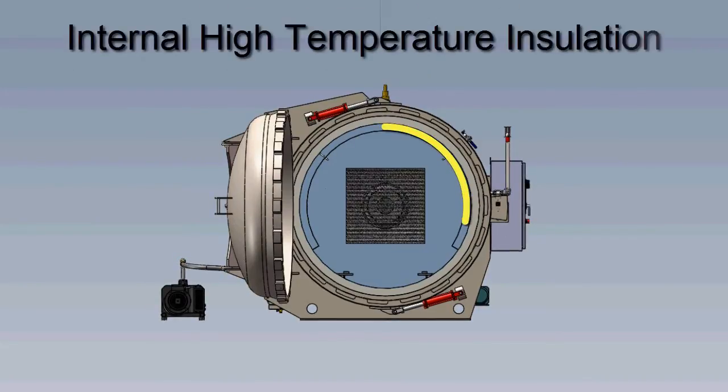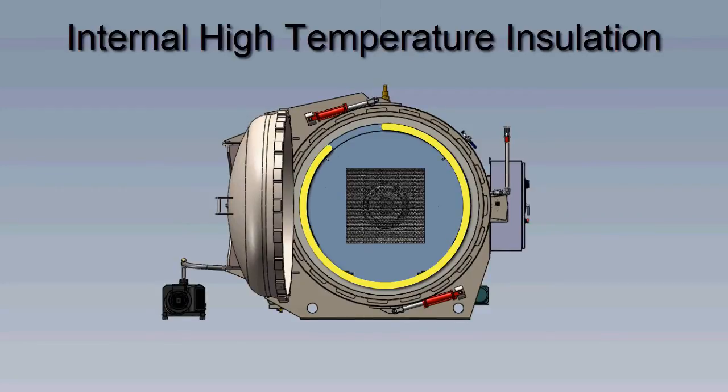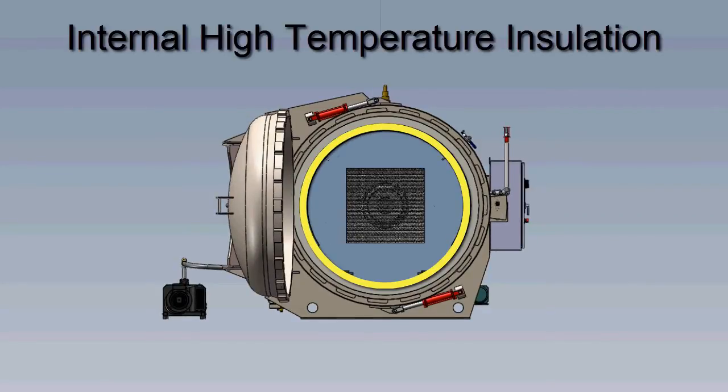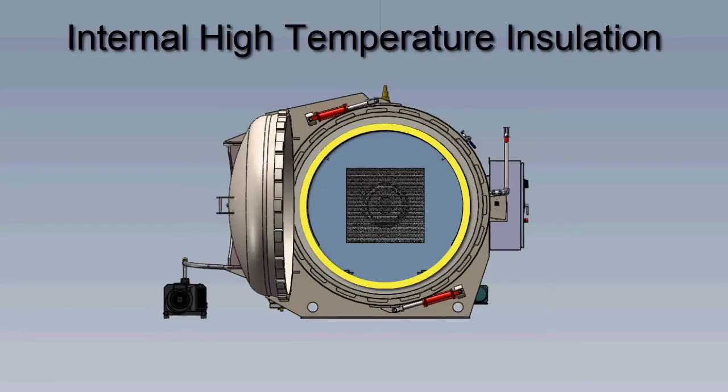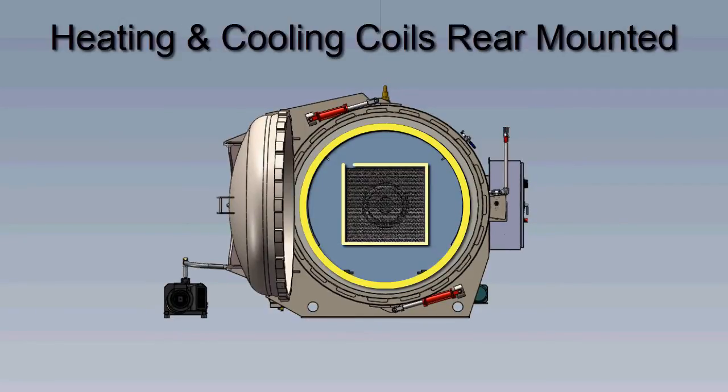Internal high-temperature insulation and ductwork along the diameter of the shell helps control the air temperature uniformity throughout the chamber supplied by the heating and cooling coils in the rear of the autoclave.